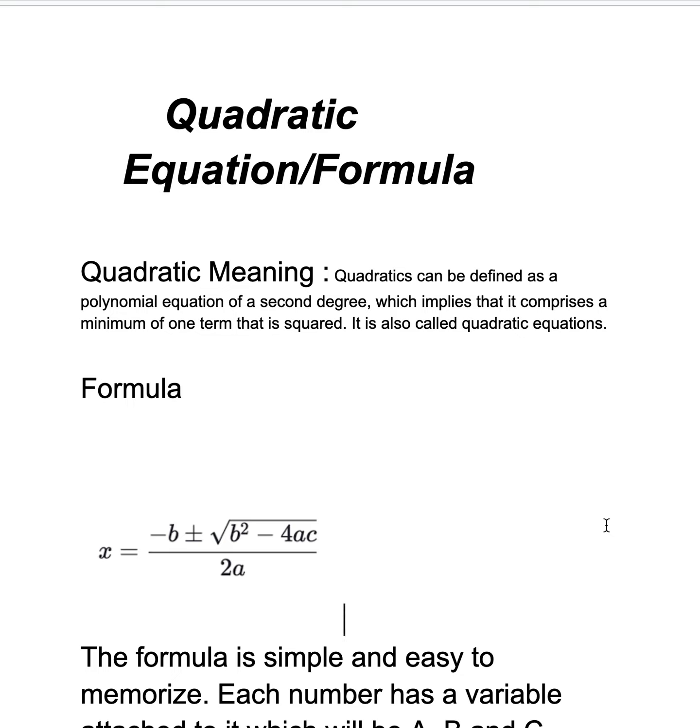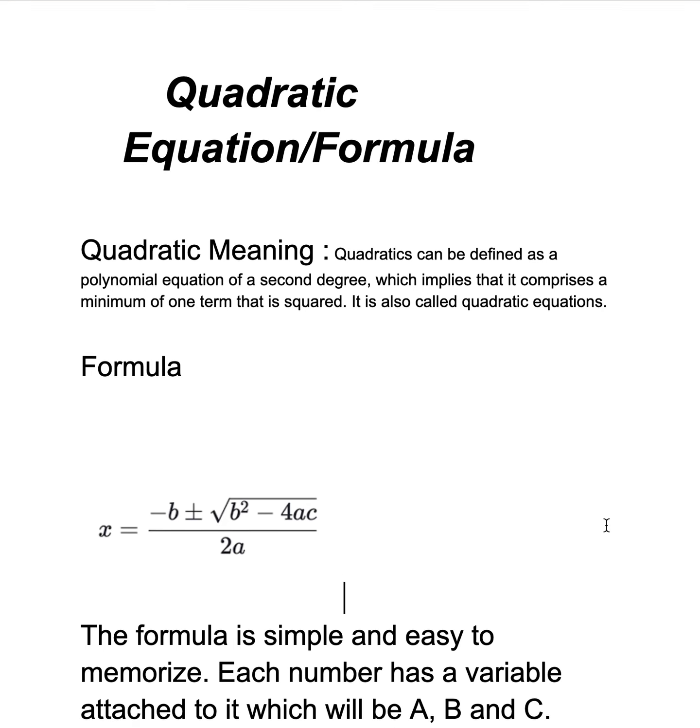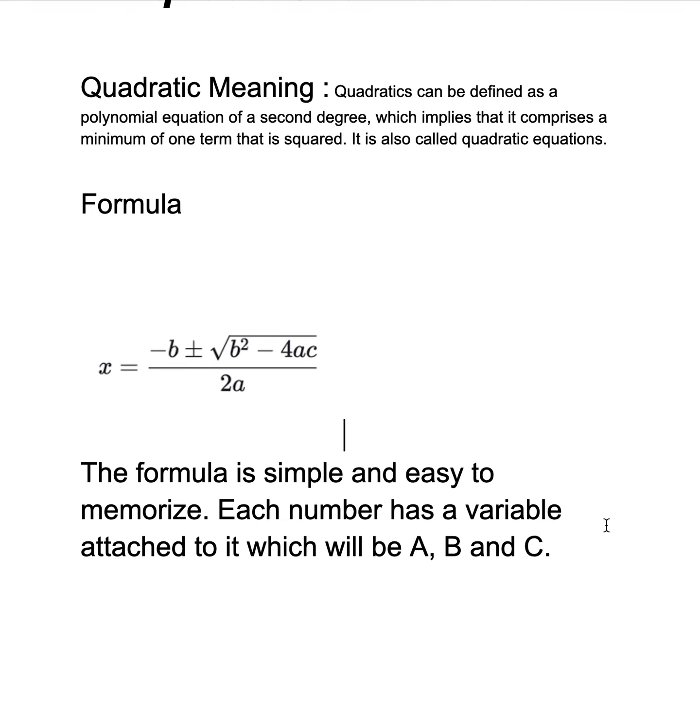The formula is simple and easy to memorize. Each number has a variable attached to it which will be A, B, and C. So minus b - that's the b. The b squared - that's the number. Then a and c. You're getting it.